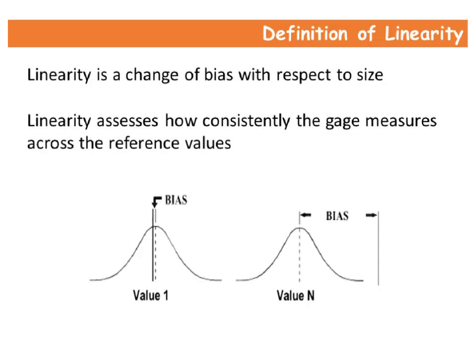The difference of bias throughout the expected operating measurement range of the equipment is called linearity. Linearity can be thought of as a change of bias with respect to size. In other words, linearity assesses how consistently the gauge measures across the reference values.